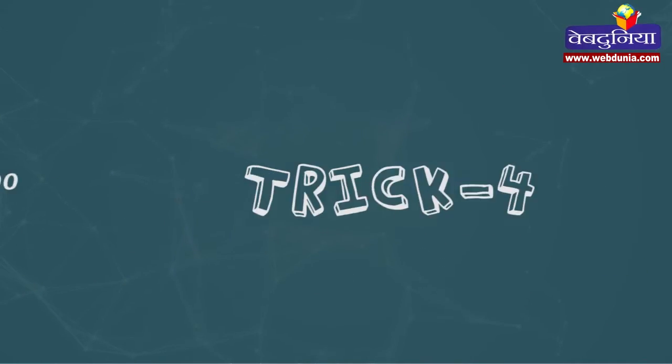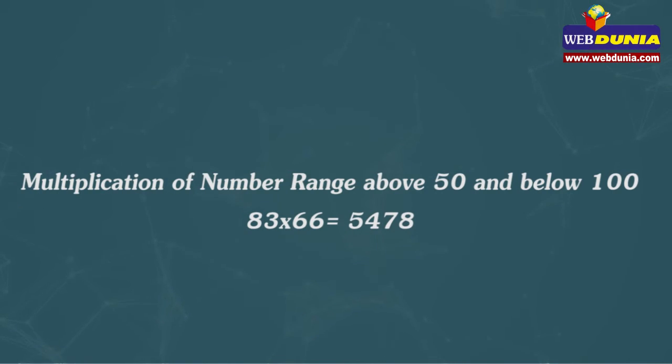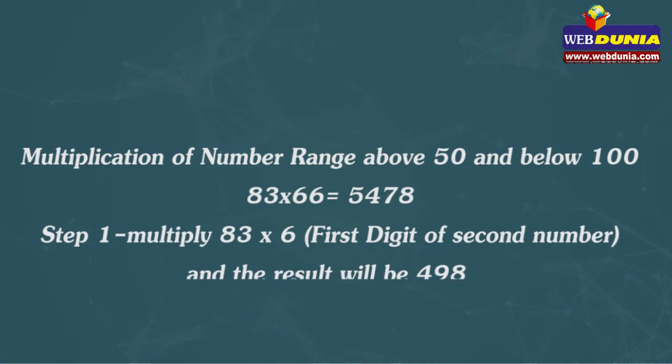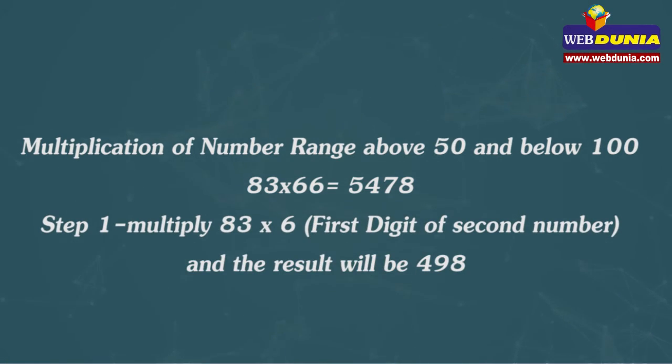Trick 4: Multiplication of number range above 50 and below 100. 83 multiplied by 66 equals 5478. Step 1: Multiply 83 by 6, first digit of second number, and the result will be 498.